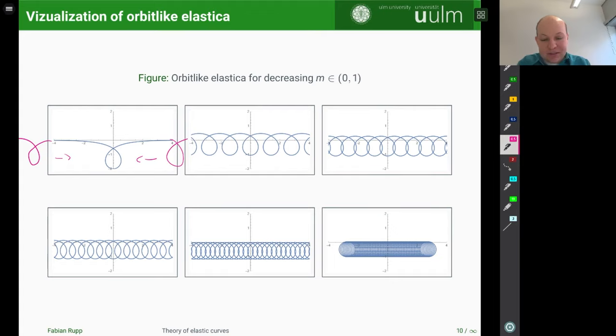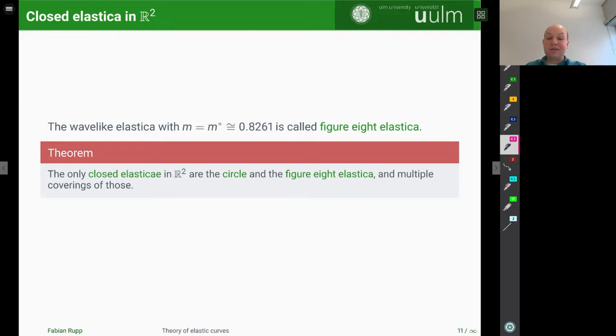So this is the case of the orbit-like elastica, how they look like. So in particular, what we saw now is that there is really only one of these curves which was closed, namely the figure 8 elastica. And this can be summarized in the following theorem. So here, this is the definition of the figure 8 elastica, if you want. And the theorem says that there's precisely two kinds of elastica in R². One is the circle and the other one is this figure 8 elastica.